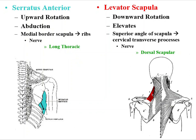Still on the posterior side, we can see the levator scapula here coming off the superior angle of the scapula to the cervical transverse processes. It does what the name says — it elevates the scapula. It also contributes to downward rotation because if you create a force on the superior angle, the glenoid fossa will point down. Neural innervation is the dorsal scapular nerve.